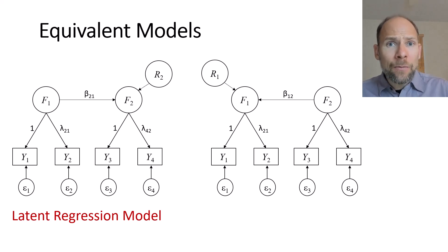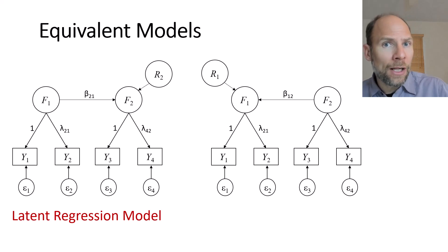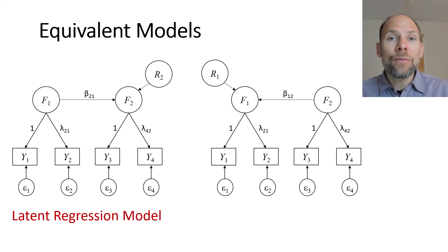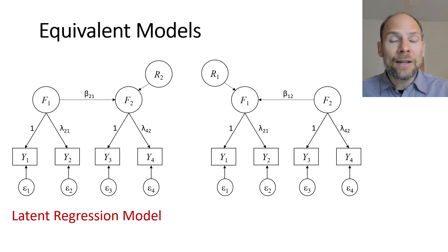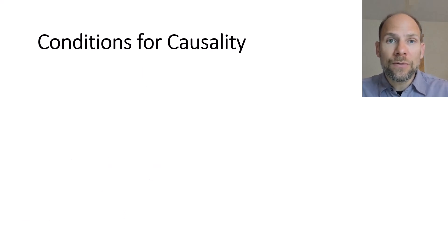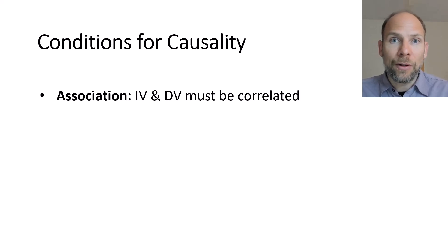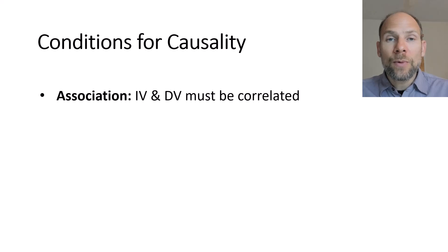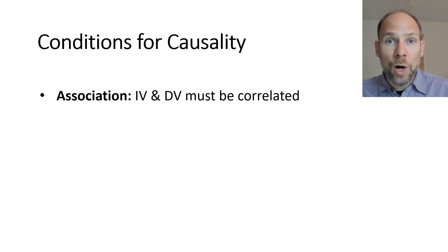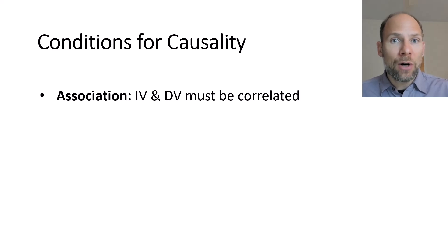How can we prove causality? What are conditions under which we can be reasonably certain that a causal effect goes in one direction and not the other? It is useful to learn about three conditions for causality. The first one is association, meaning the independent variable or cause must be correlated with the dependent variable or effect. There has to be a relationship — a correlation or association — between the independent variable and the dependent variable. Otherwise, there could not be causality.